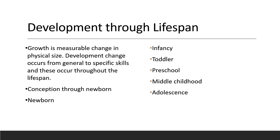Teratogens are various poisons that can affect the unborn or the newborn and depend on the duration of exposure, the amount of the teratogenic substance, and the stage of development. Teratogens are classified into four types: physical, an example is hyperthermia; metabolic, example would be diabetes; infection, example would be rubella; and drugs, the example would be alcohol.